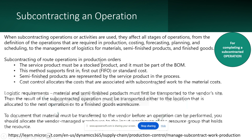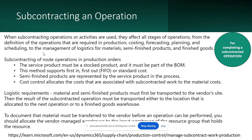Next is subcontracting an operation. When subcontracting operational activities, they affect all stages of the operation — this is critical. Unlike subcontracting an item, when subcontracting an operation, for example cutting and sewing the fabric in-house and then sending it to a third-party vendor for logo printing, you are performing an operation using an external vendor. There are a lot of setups required. To be honest, I have never done this in my career — I am exploring it along with you.